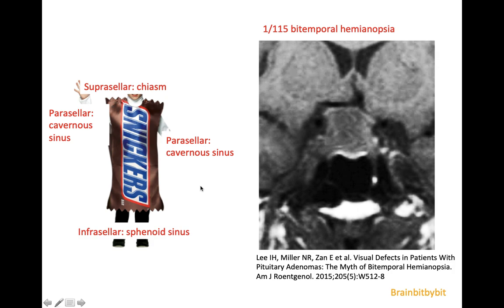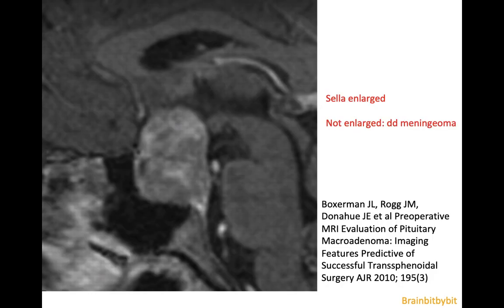The macroadenoma can also extend into the cavernous sinus, and it can extend infrasellar into the sphenoid sinus, sometimes with destruction of the clivus.